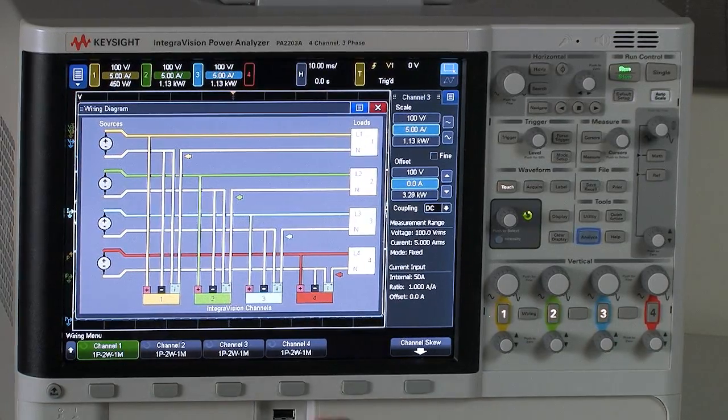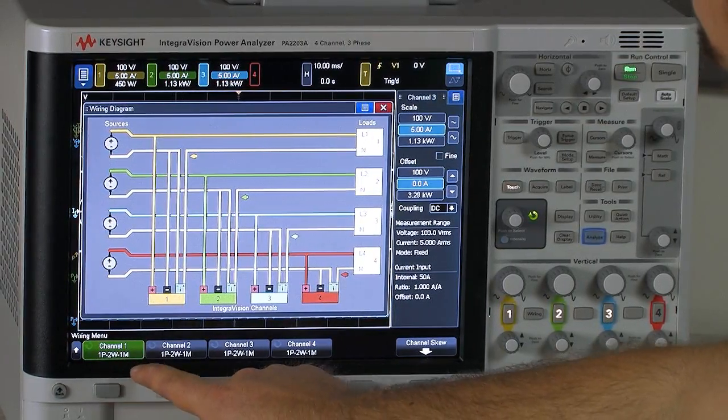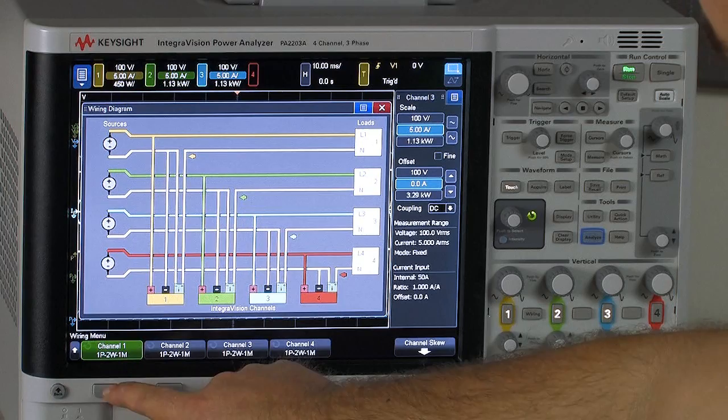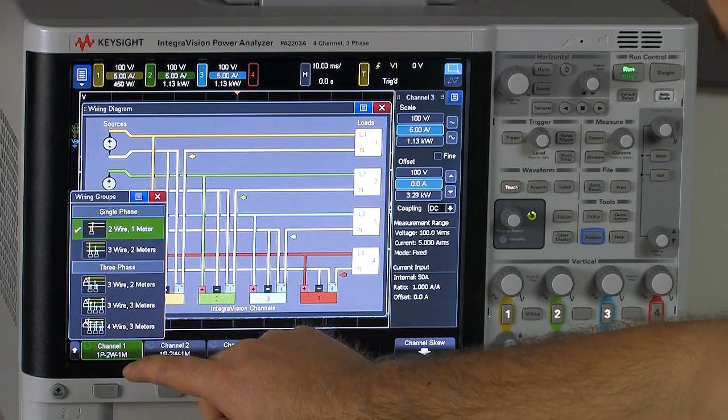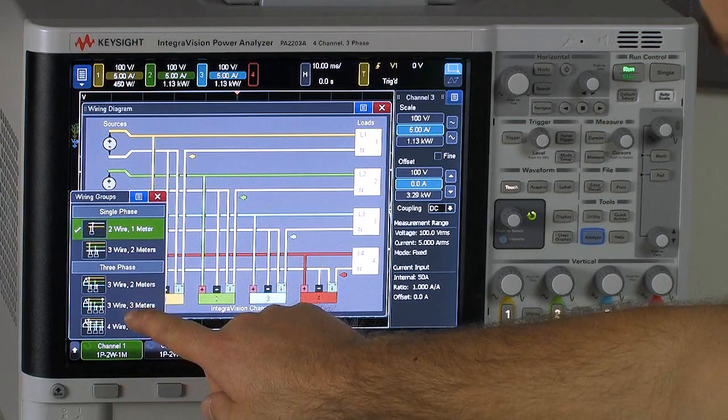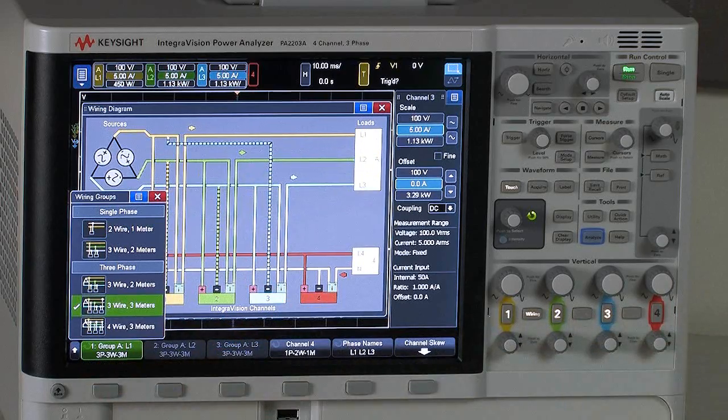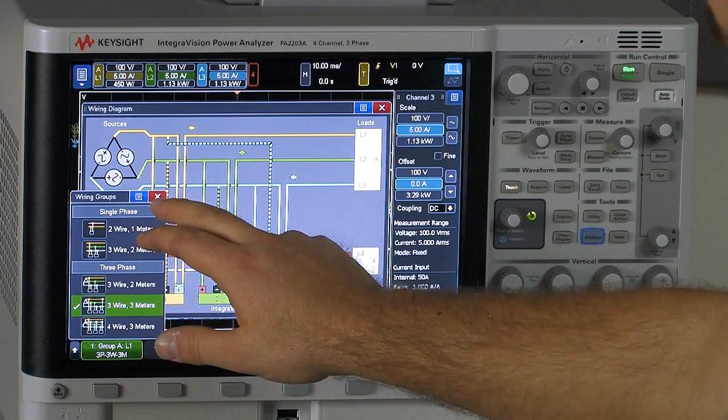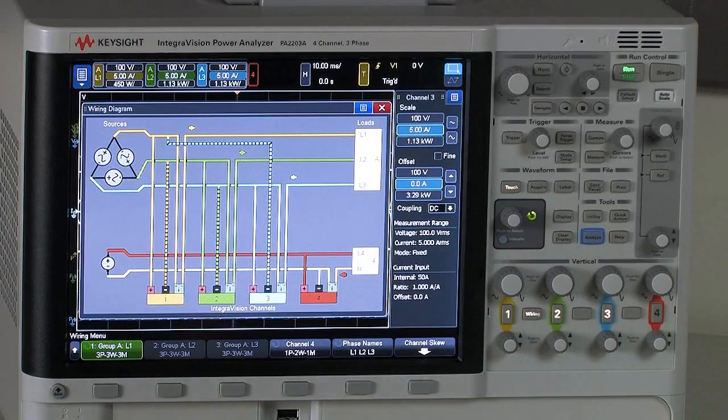So to start out, to group them, I'm just going to go right down here to the channel selection key, and we're going to start off with a three-wire, three-meter, three-phase configuration that you would typically use for measuring in a delta configuration.